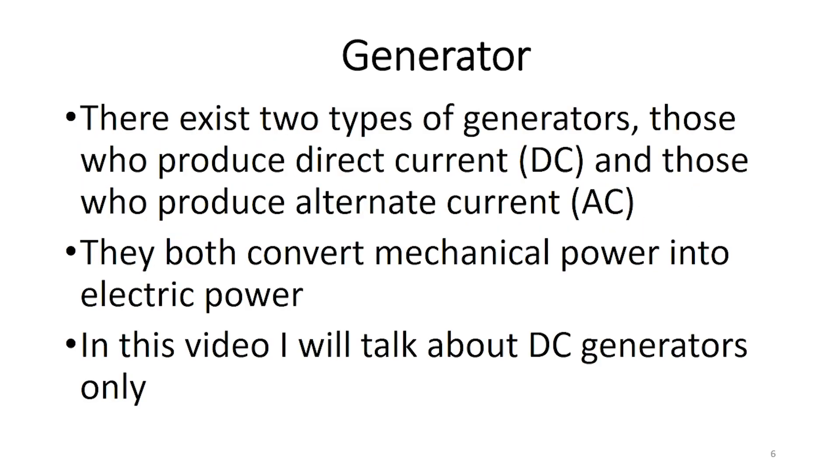There exist two types of generators, those who produce direct current, or DC, and those who produce alternate current, or AC. They both convert mechanical power into electric power. In this video, I will talk about DC generators only.